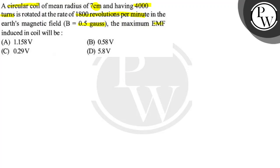The maximum EMF induced in coil will be - so the formula of EMF is B omega N A, that is magnetic field times omega times number of turns times area, which equals B omega N pi r squared.